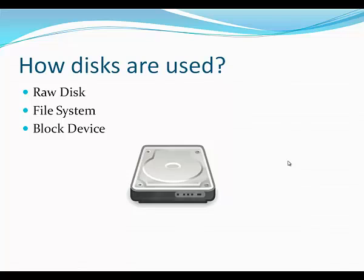Partitions are used in three ways: raw disk, file system, and block device. A raw disk is a newly created partition of a fixed size without any data or file system in it. A file system is when a type of file system like ext3, ext4, XFS, vfat, or swap is applied on a raw disk.